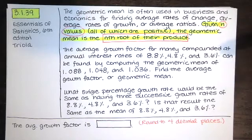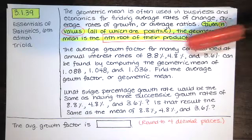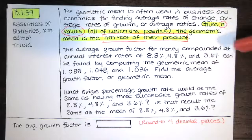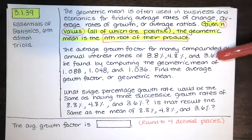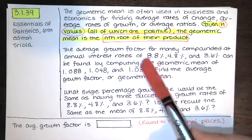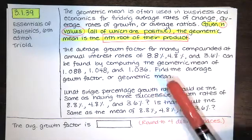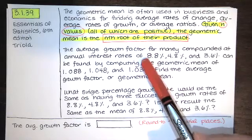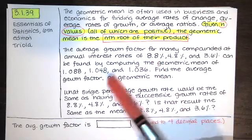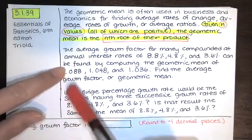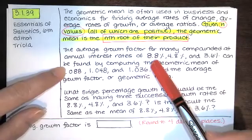It says, the average growth factor for money compounded at annual interest rates of 8.8%, 4.8%, and 3.6% can be found by computing the geometric mean of these right here. Notice that 8.8%, if I converted that to decimal form would be 0.088. So if there was not a one here, but it was 0.088, that would be the decimal form of that percentage rate.